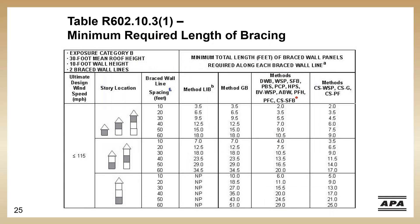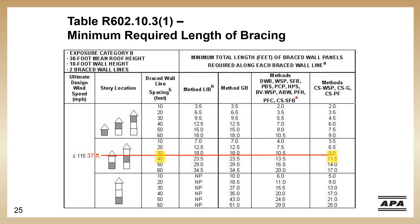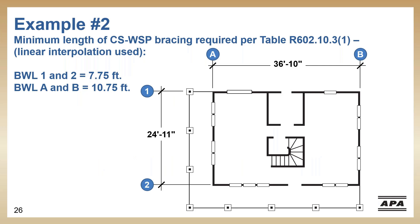Going back to our minimum length table, we're still 115 miles per hour ultimate wind speed, but now we're looking at the first of a two-story. So in the story location column, we're going to be in the middle row. Our brace wall line spacing is about 25 feet for the first two brace wall lines and about 37 feet for the other two. After we interpolate this data, the required bracing for brace wall lines one and two is 7.75 feet, and for A and B it's 10.75 feet. Again, we need more bracing for the shorter walls when looking at wind.